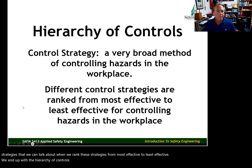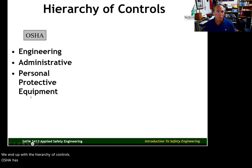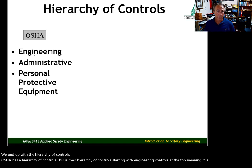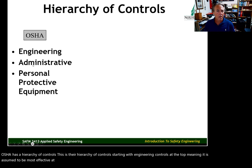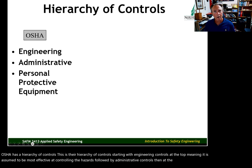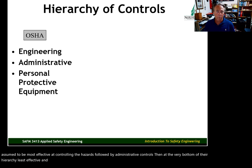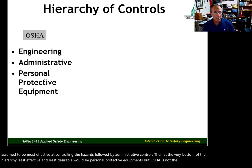OSHA has a hierarchy of controls starting with engineering controls at the top, meaning it is assumed to be most effective at controlling hazards, followed by administrative controls, then at the very bottom — least effective and least desirable — personal protective equipment.